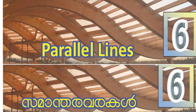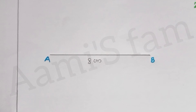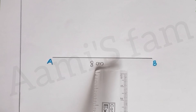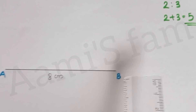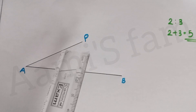The exercise has 4 questions. First question: Draw an 8cm long line and divide it in the ratio 2 to 3. Since 2 plus 3 equals 5, we take the 8cm long line with 5 equal parts. You can see the answer relates to 5 parts.